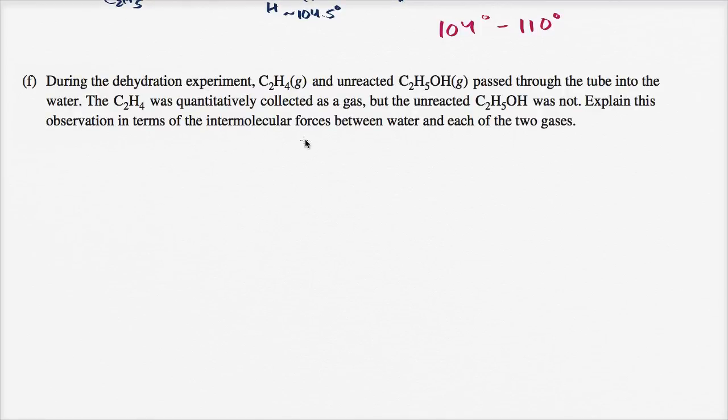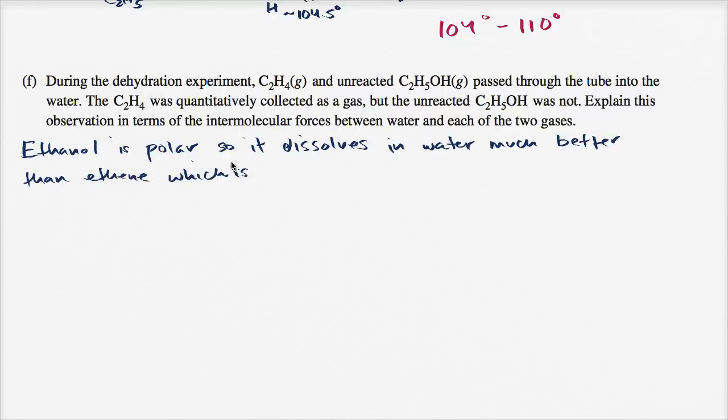Explain this observation in terms of intermolecular forces between water and each of the two gases. So we could write: ethanol is polar, so it dissolves in water much better than ethene, which is non-polar.